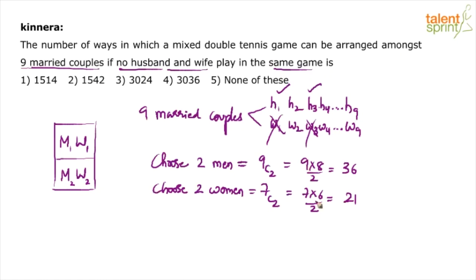Now we have to arrange. So we have got two men and two women. Now we have to arrange them in this tennis law. Now how many ways can that be done? Arrangement. Arrangement can be done in how many ways?